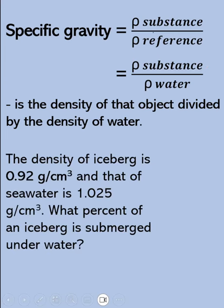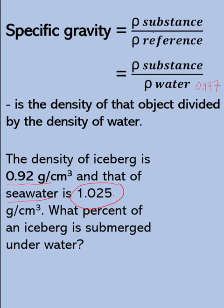Now let's use this in interpreting the iceberg. The density of an iceberg is 0.92 grams per cubic centimeter, and the density of seawater is 1.025 grams per cubic centimeter. What percent of an iceberg is submerged underwater? Here the iceberg is floating on seawater, which has a different density than pure water because it contains salt and other minerals. Pure water is 0.997 g/ml.